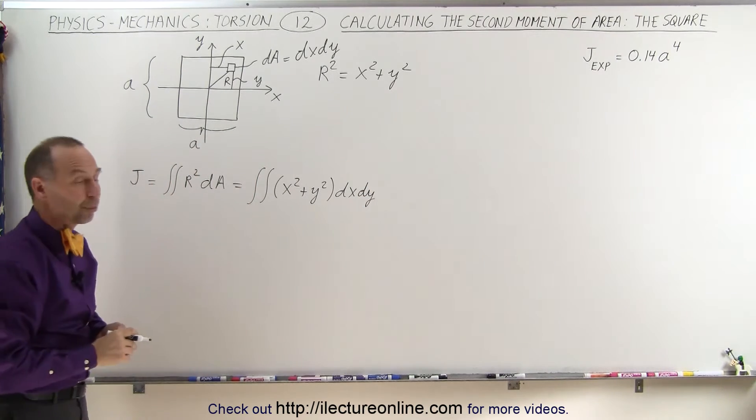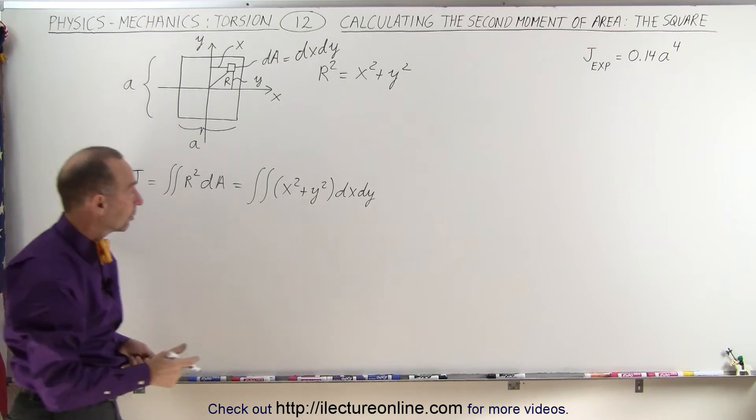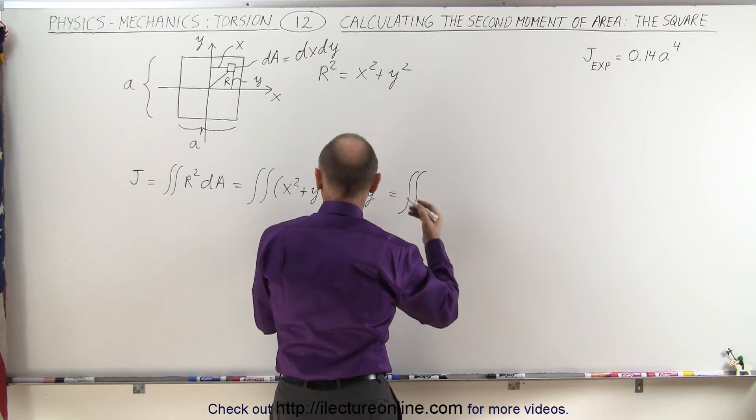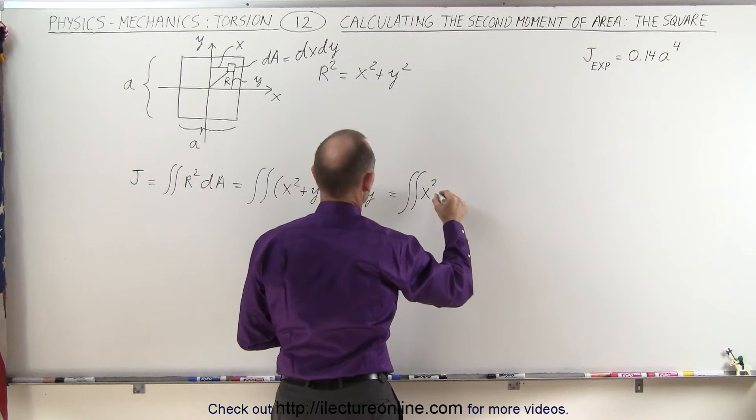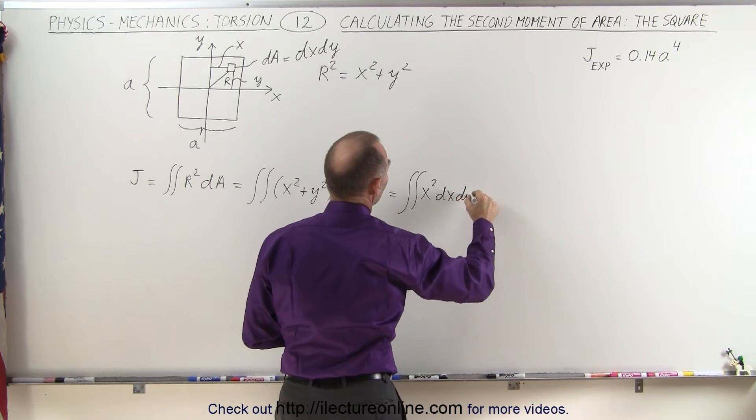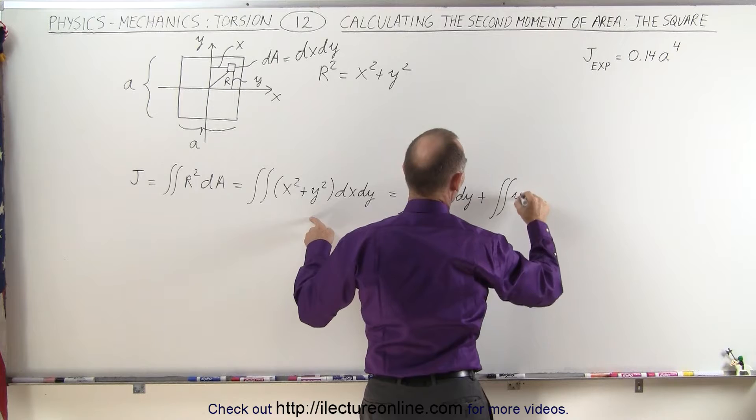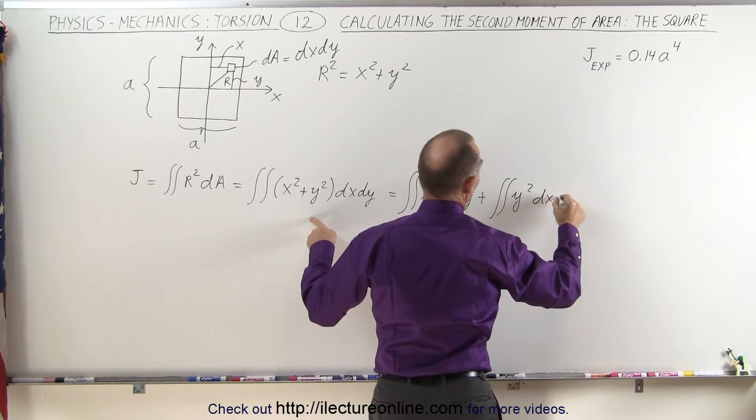Now, we can separate that in two separate integrals. This can now be written as the first integral of x squared times dx dy, plus a second set of double integrals of y squared dx times dy.